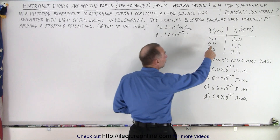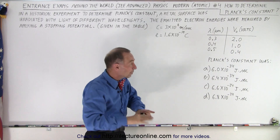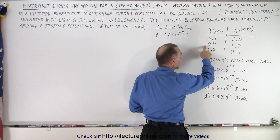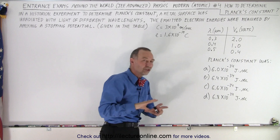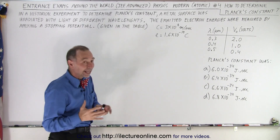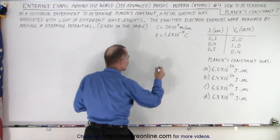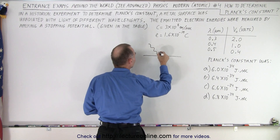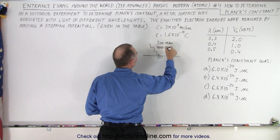If light of 0.3 micrometers — 300 nanometers — was used, the stopping potential necessary to stop the emitted electrons is 2 volts. When the wavelength went up to 400 nanometers, you only needed 1 volt. And at 500 nanometers, you needed 0.4 volts to stop the exiting electrons. From that data, they were supposed to determine Planck's constant.